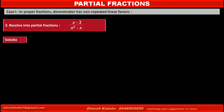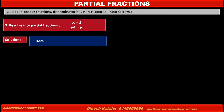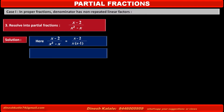Solution. Here, in the given fraction x minus 2 upon x squared minus x, the denominator x squared minus x can be factorized as x(x minus 1). So it is equal to x minus 2 upon x(x minus 1). By using these two factors of the denominator, x and x minus 1, we let x minus 2 upon x(x minus 1) equal to a upon x plus b upon x minus 1.